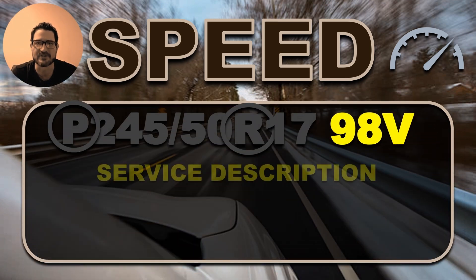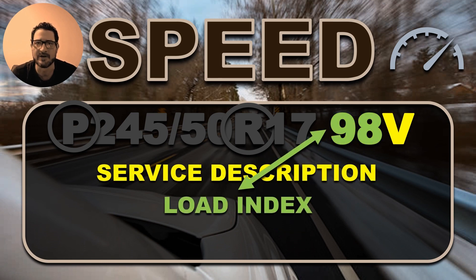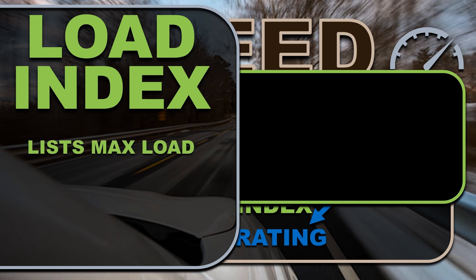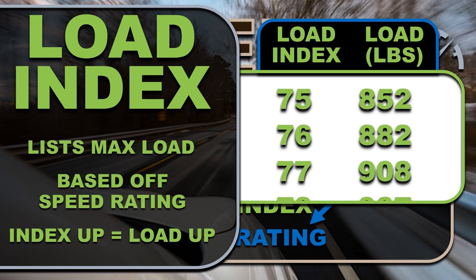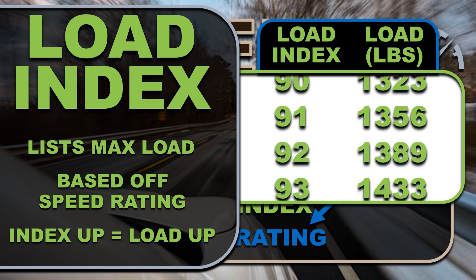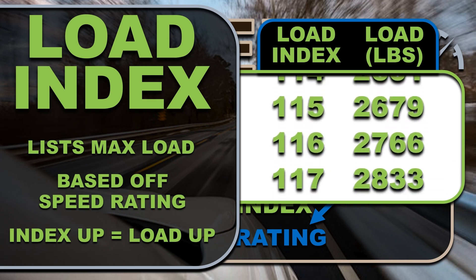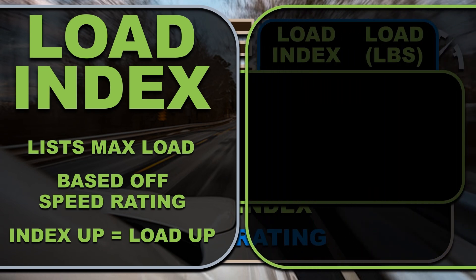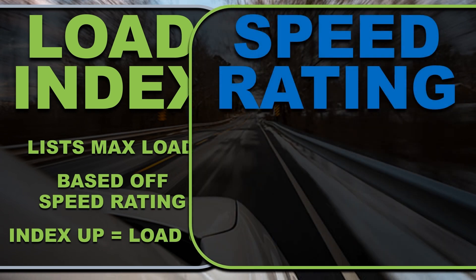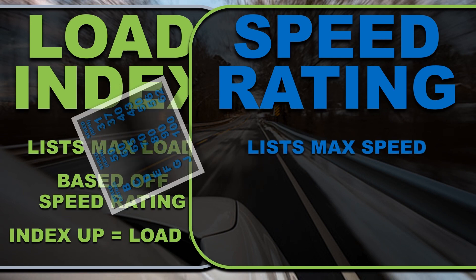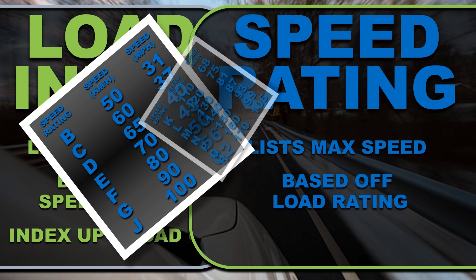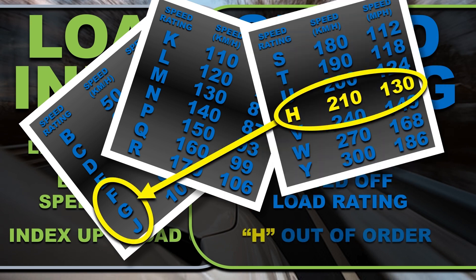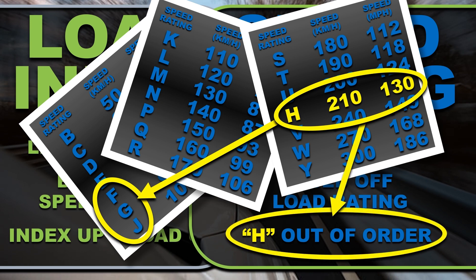Getting back into it, we have our service description — an alphanumeric code that contains the load index and speed rating. The load index informs us of the maximum weight capacity the tire can handle at the speed rating value; this is a number to plug into a chart. As the load index value increases, so does the weight capacity, and we must ensure the tires we install are the same or better than what the vehicle demands. Our speed rating is the letter value following our load index, and by referencing this letter we can find the maximum speed the tire's load value is certified to handle. Although most speeds increase as we descend the alphabet, this is not always the case — the letter H is out of alphabetical order, which expresses the importance of using the chart to ensure proper tires are installed.